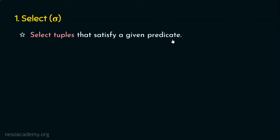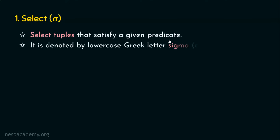When we see an example, you will be able to understand things clearly. The select operation is denoted by the lowercase Greek letter sigma. This is the symbol used to denote the select operation in relational algebra. As for inputs, a relational algebra operation can take one or more relations as input — in the case of select, it is going to take only one input relation.